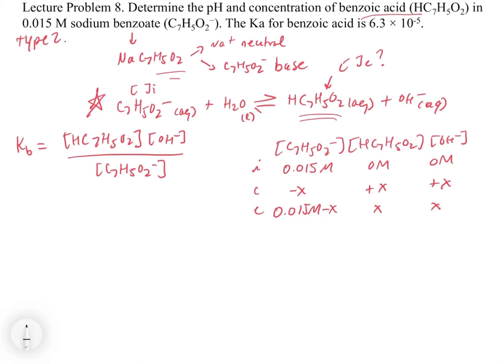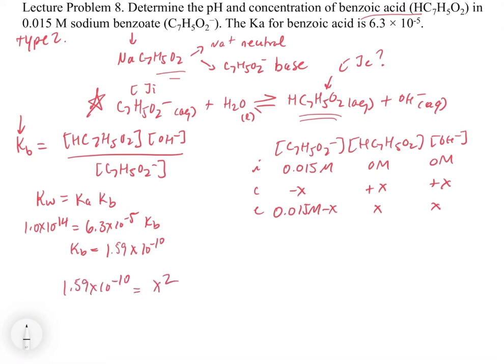Now for Kb - we need the Kb because it's acting as a base, but it gives us the Ka. We know how to take care of that: Kw equals Ka times Kb. We plug in 1 times 10 to the minus 14 for Kw and 6.3 times 10 to the minus 5 for Ka, and solve for Kb. Kb equals 1.59 times 10 to the minus 10. So 1.59 times 10 to the minus 10 equals x squared over 0.015 minus x.